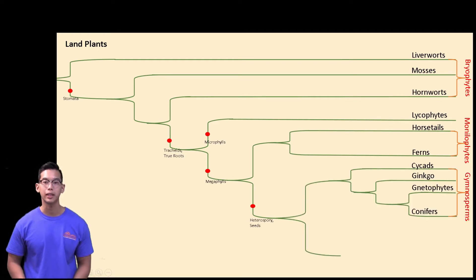Gymnosperms are known as our naked seed plants because of their exposed ovules. Their synapomorphies include seeds, woody secondary growth, and heterospory. Our gymnosperms include our cycads, our ginkgos, our gnetophytes, and our conifers.